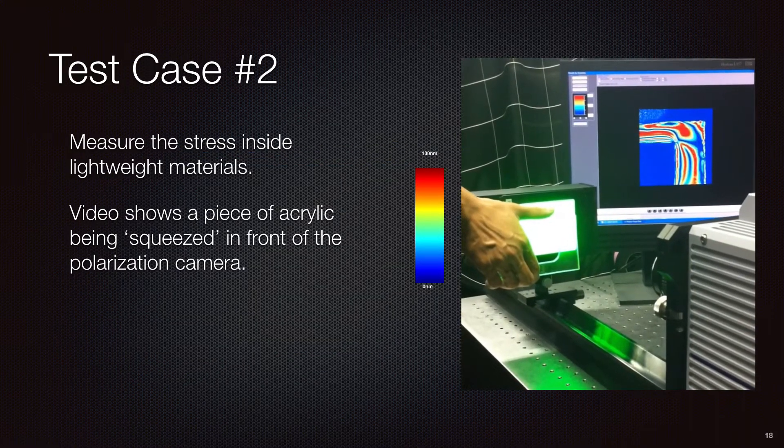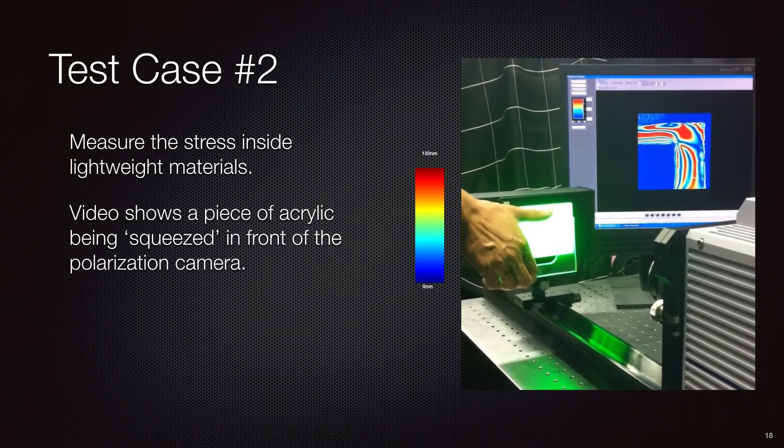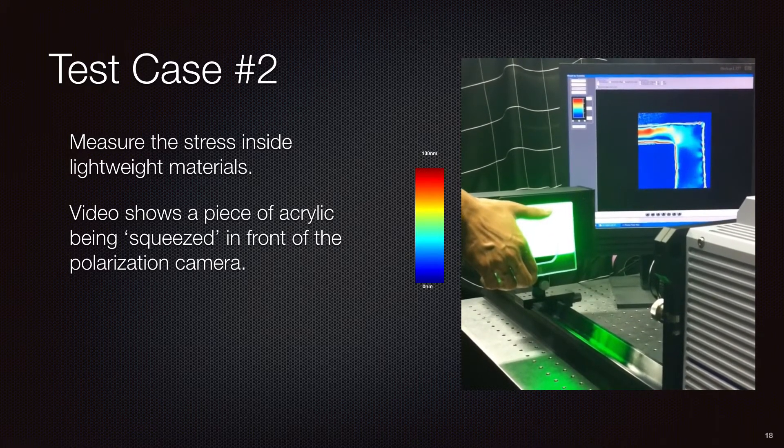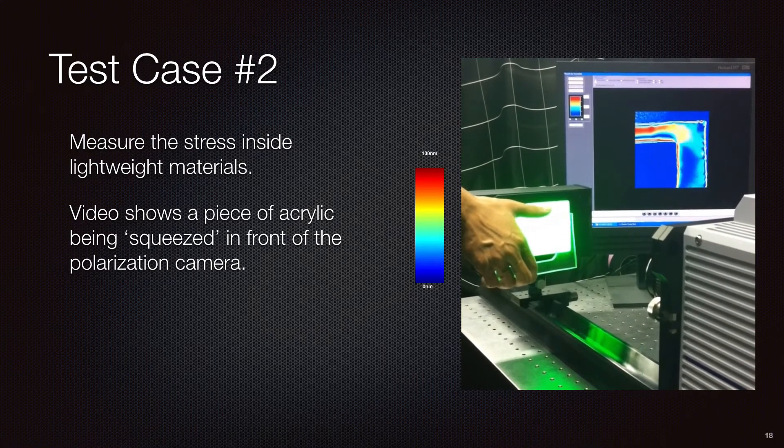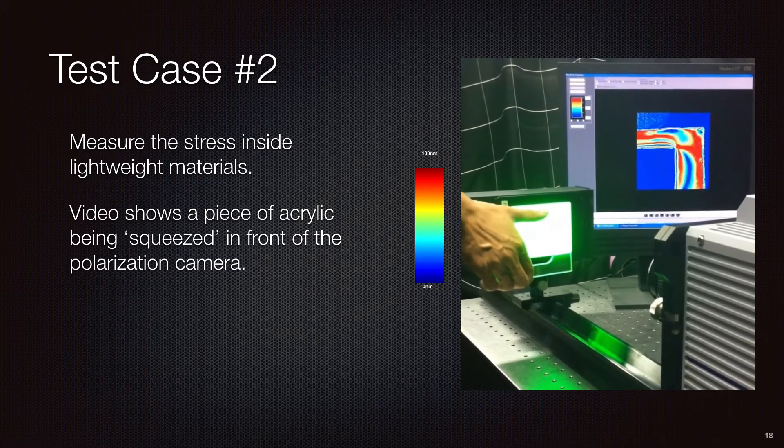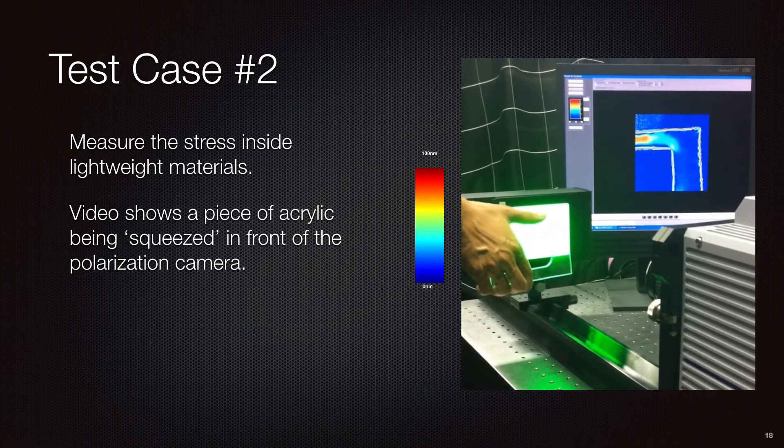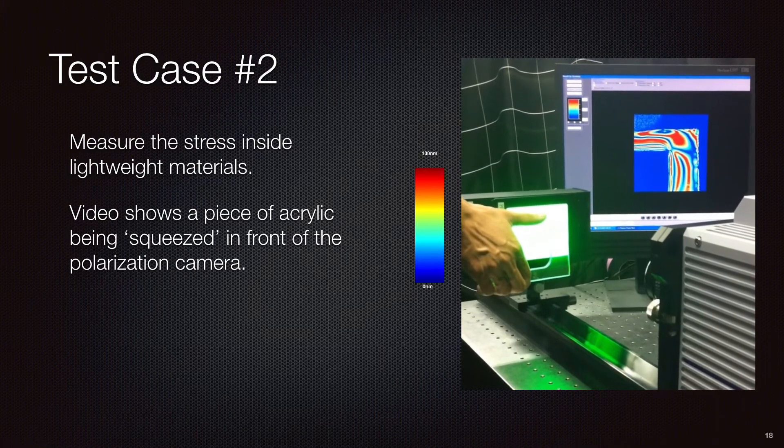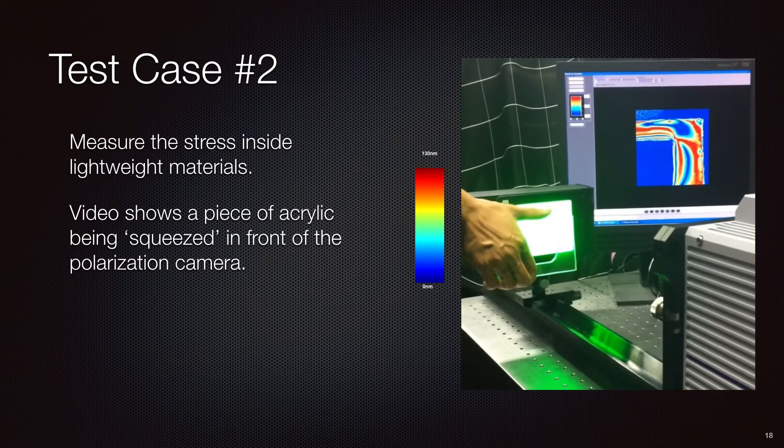This example uses the same test configuration, but this time we are squeezing a U-shaped piece of epoxy resin while showing the real-time image on the display. As well as the retardation data, we can also show the axis, the direction of the strain, each of the four different polarization axis pixels, as well as the traditional high-speed data, where the Crysta can still operate as a normal monochrome high-speed camera.